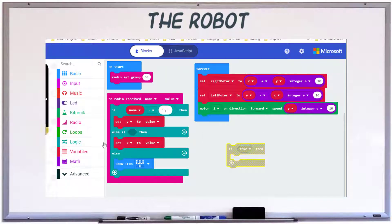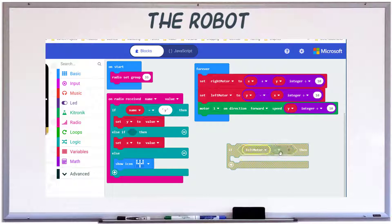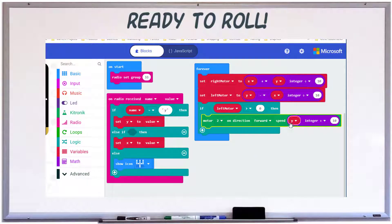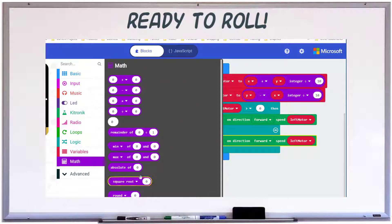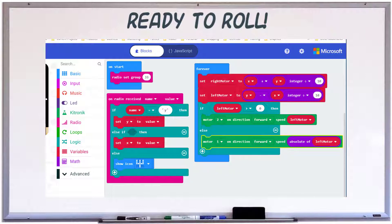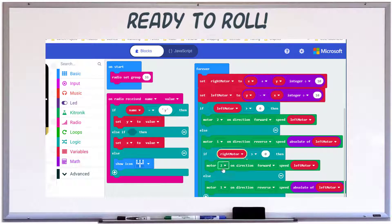For each wheel, our direction is determined by whether the number is negative or positive. If it's positive, set the direction to forward and the speed to the variable. If it's negative, set the direction to reverse and the speed to the positive of the variable.